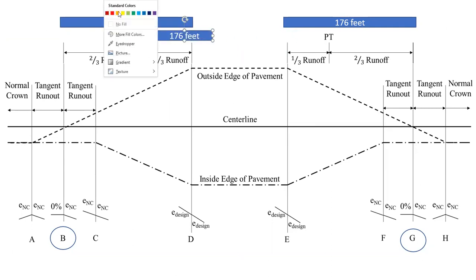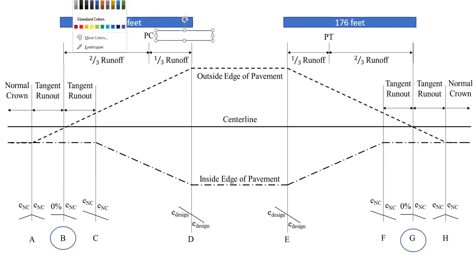We also in our previous problem calculated and determined the stations of our PC and PT. The station of our PC is 32 plus 21.59. And our PT is 37 plus 72.73.